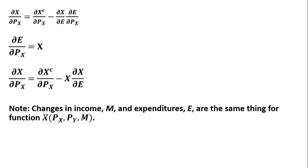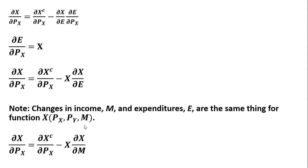One other note: changes in income m and expenditures are the same thing for the ordinary demand function, so I'm going to change that e to an m for income. And that is the derivation of the Slutsky equation. The left-hand side is the total effect of the price change, which equals the substitution effect minus the income effect. I hope you found this video helpful.